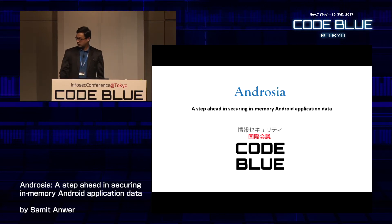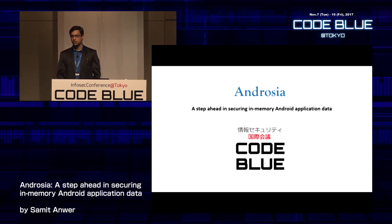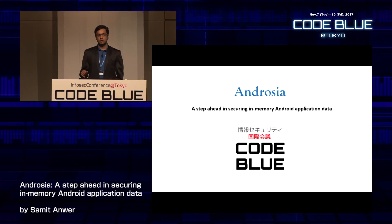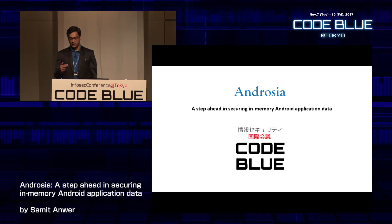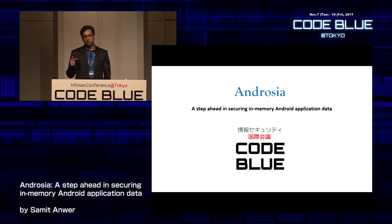Androsia is basically a static code analyzer. More specifically, it performs a data flow analysis over your Android application's code to figure out all the object allocations happening in your application. Once it figures out those allocations, it tracks the use of the objects and determines where the object is last used. Once it finds the last use, it clears the memory content of that object.